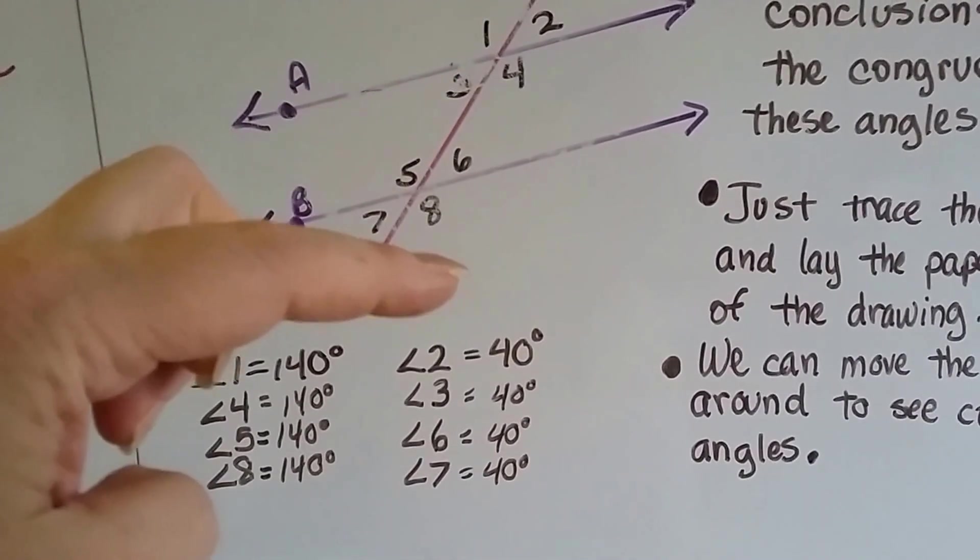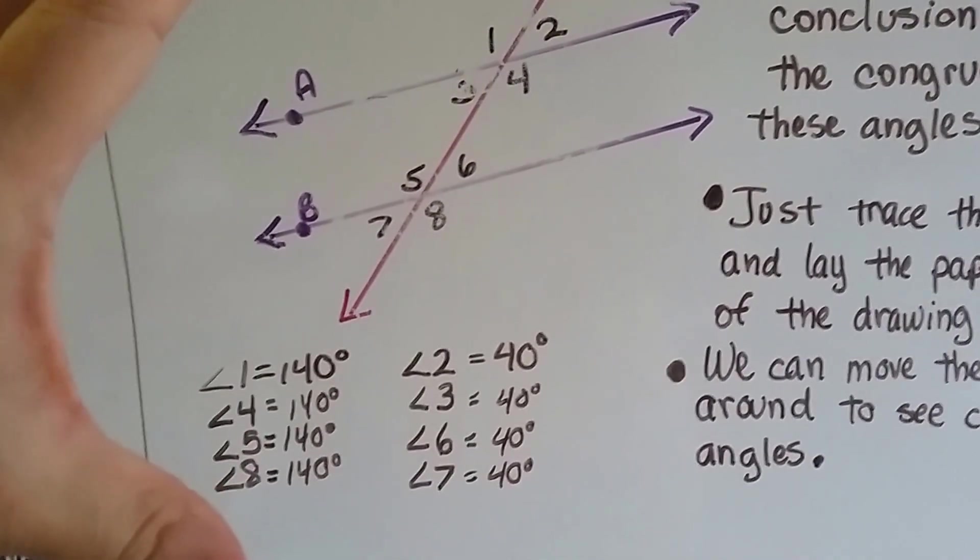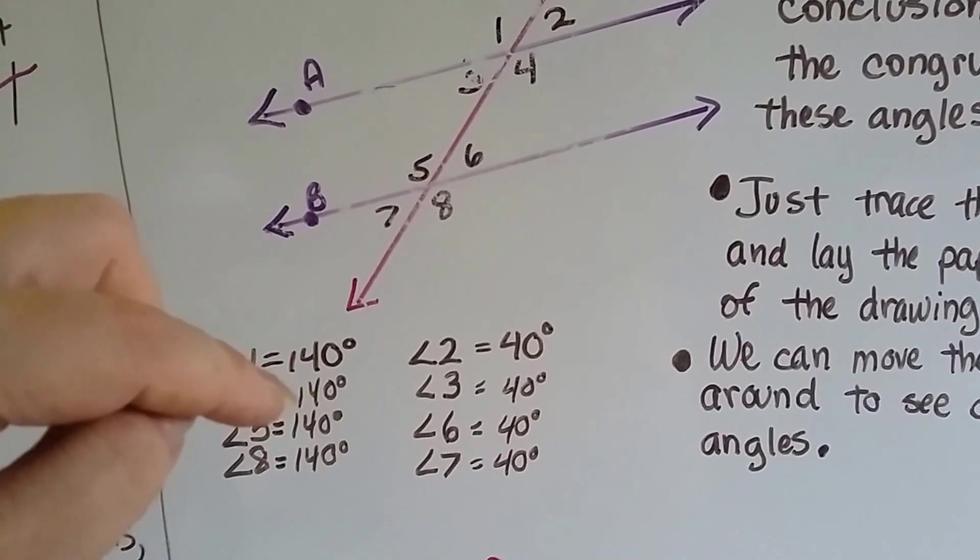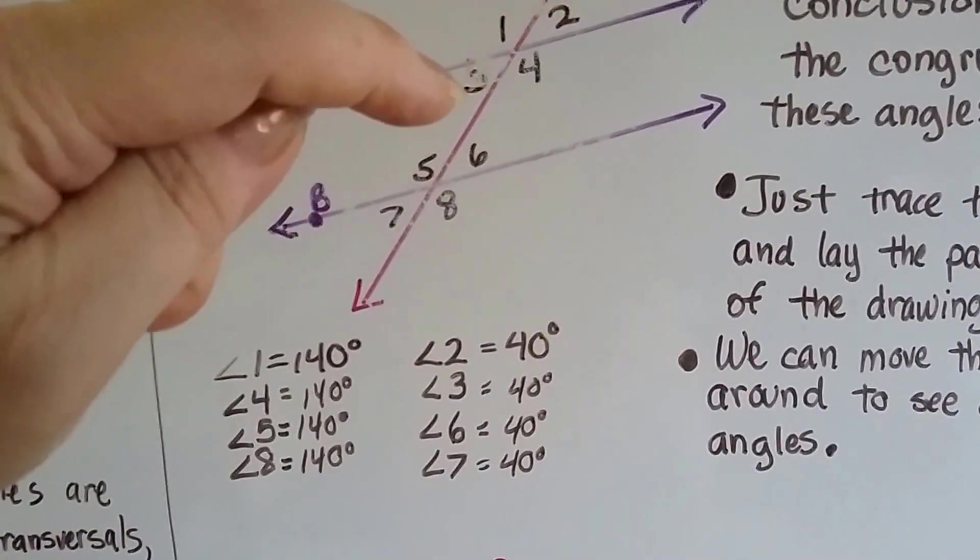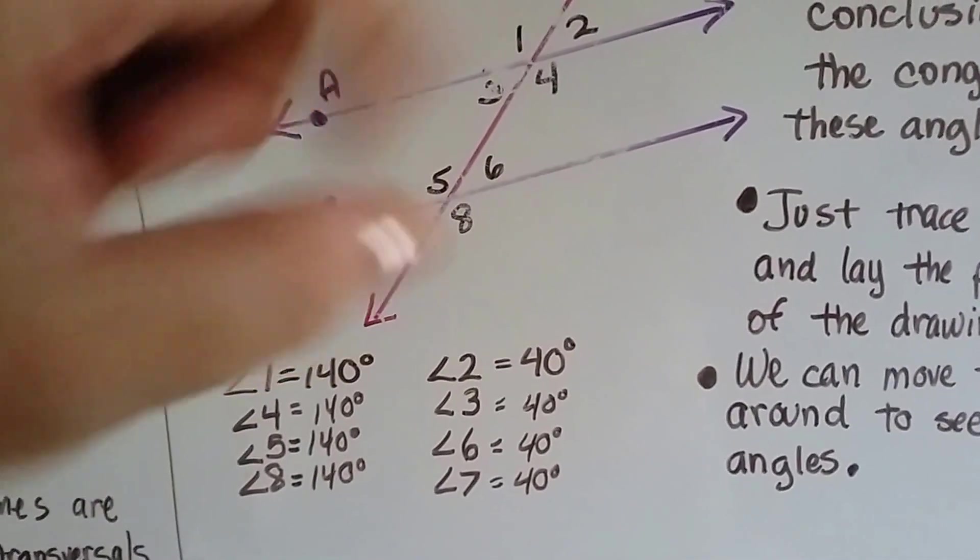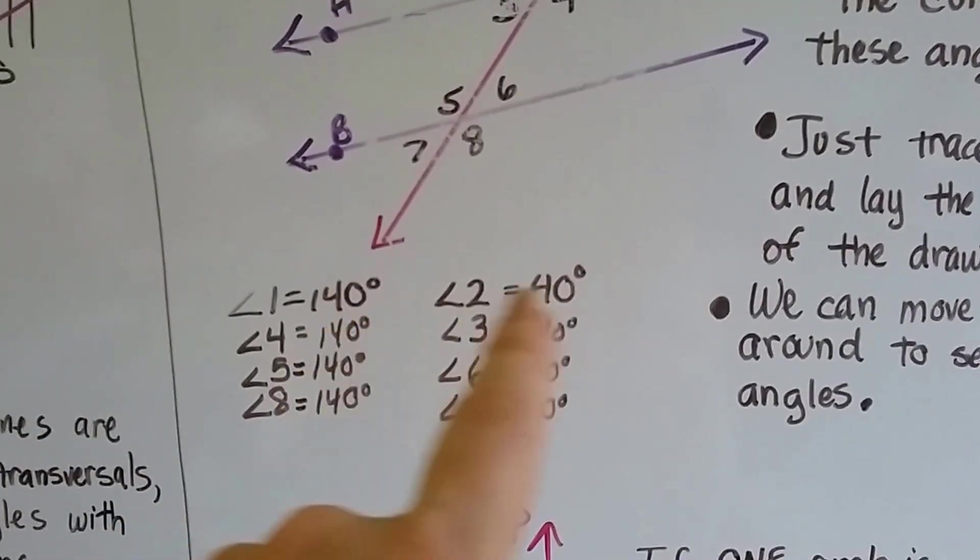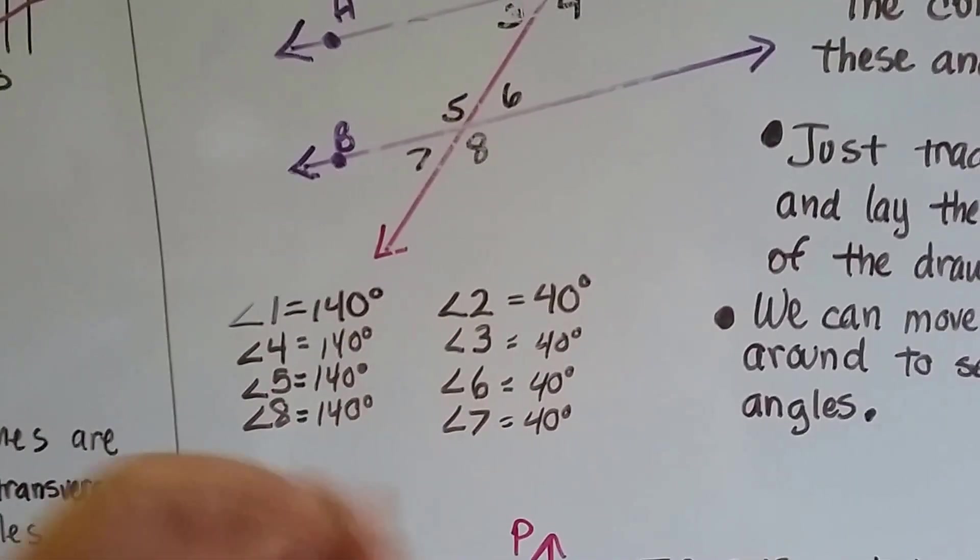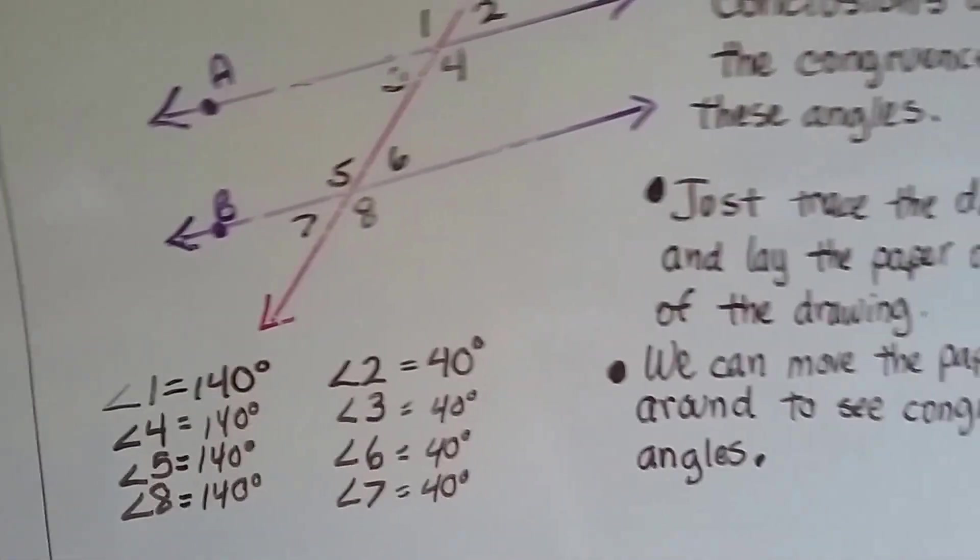1, 4, 5, and 8. Those are the bigger obtuse angles. Those were 140 degrees. And 2, 3, 6, and 7 were only 40 degrees. And see, 140 plus 40 makes 180. That makes our supplementary angles. Remember what we talked about in the last video?